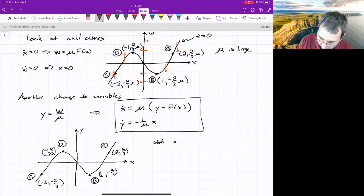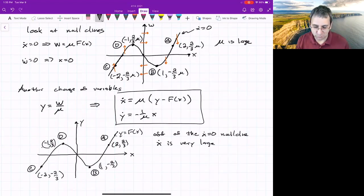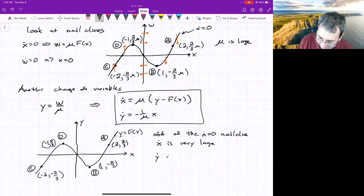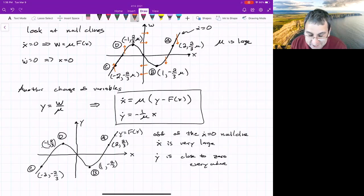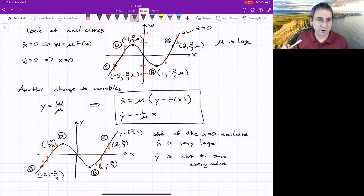But what it means is off of the x dot equals zero nullcline, which is this curve, y equals f of x. Off of that, the x dot is very large. And by very large, I mean, it's much larger than y dot. Y dot is negative one over mu. So think of one over a billion. And y dot is close to zero everywhere. I mean, it's not quite zero. It's not quite zero. Along the x dot equals zero nullcline, things are going down or going up, depending on where we are. And then almost everywhere else, things are going along the x direction very, very fast. So we might even put double arrows to show what's happening. There's just double arrows. And then down here, what's going on? Double arrows, double arrows.